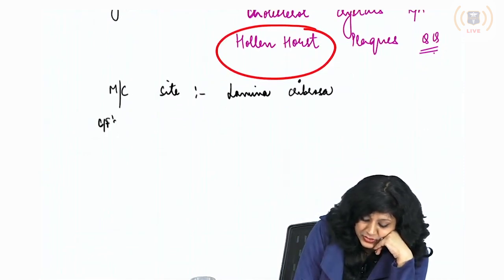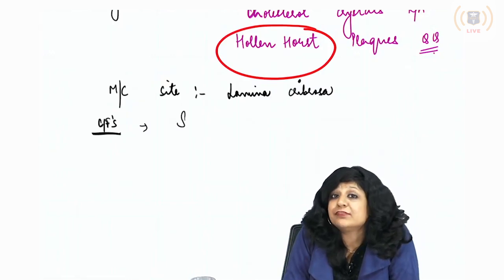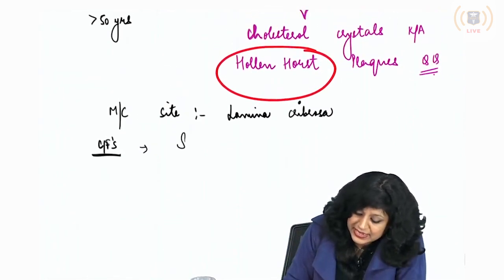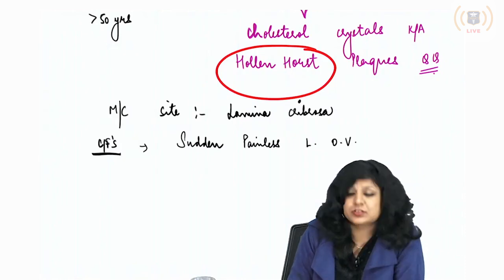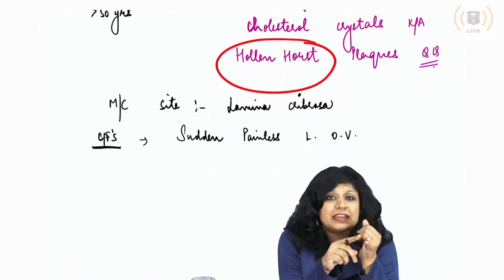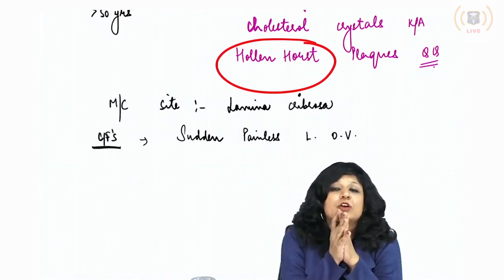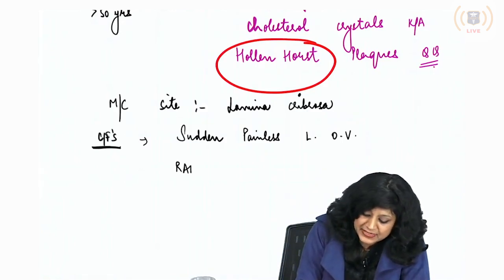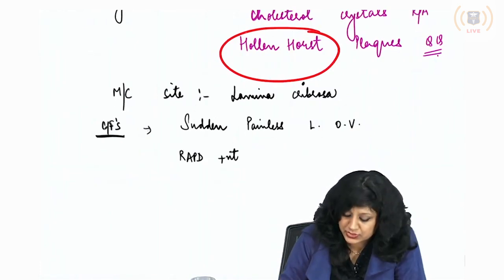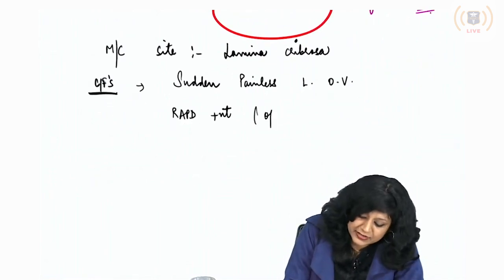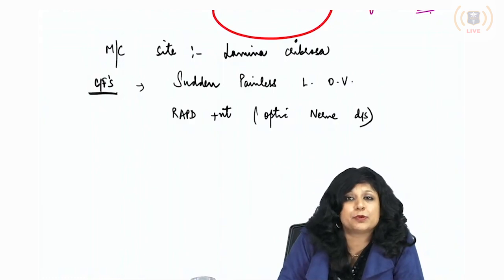Looking at the clinical features: since this is a posterior segment pathology, vascular occlusions are always painless. This patient will present with sudden painless complete loss of vision. RAPD is present due to the optic nerve defect — because it is an optic nerve disease, you get the RAPD, a pupillary defect.